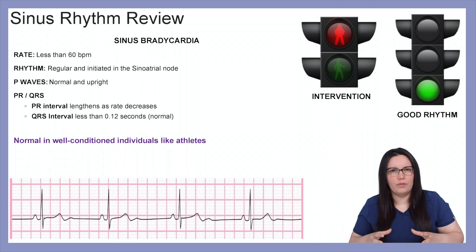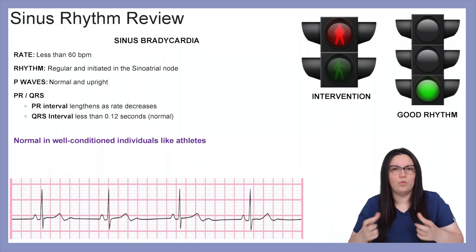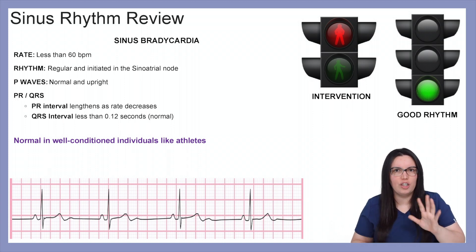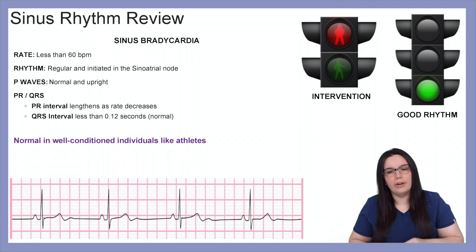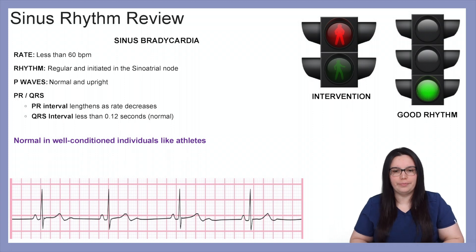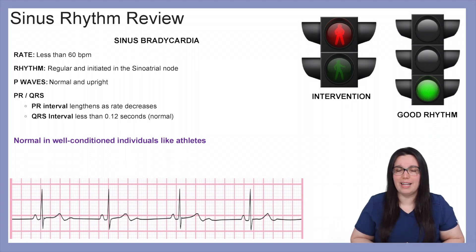The PR interval lengthens as the rate decreases — that's something new that you're going to see. Our QRS interval is less than 0.12 seconds, which is normal.